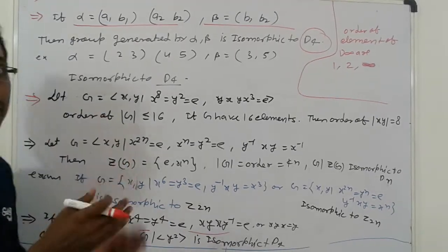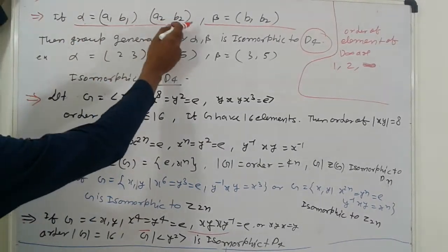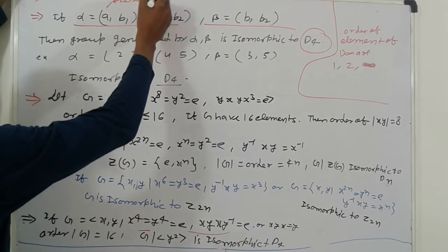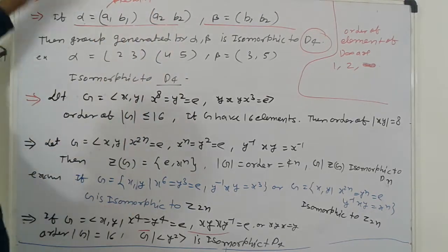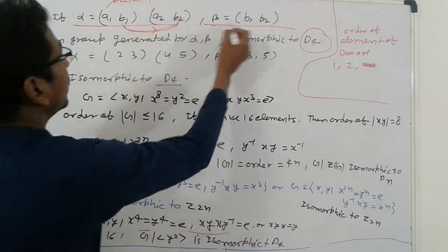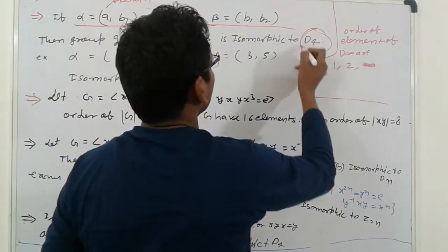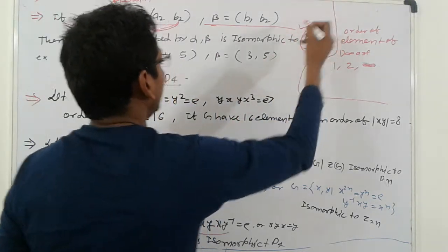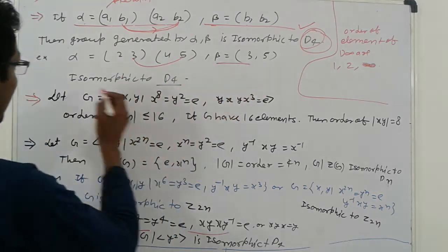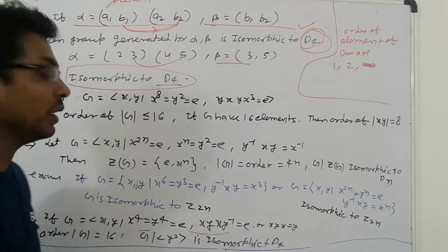Another property related to disjoint cycles: suppose α = (a₁ b₁)(a₂ b₂) is a disjoint cycle, and β = (b₁ b₂)(b₁ b₂). Then the group generated by α and β is isomorphic to D4. For example, α = (2 3)(4 5), then it is also isomorphic to D4.